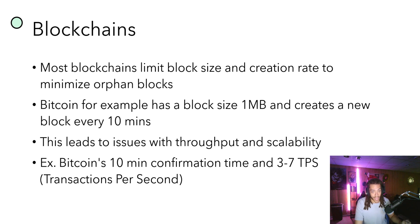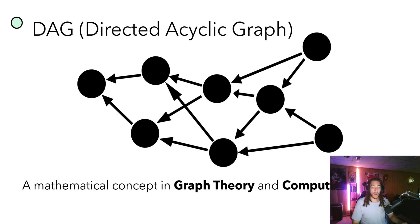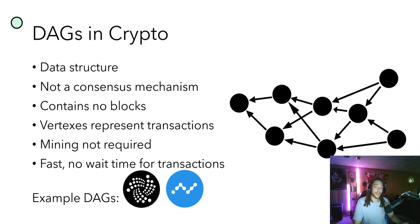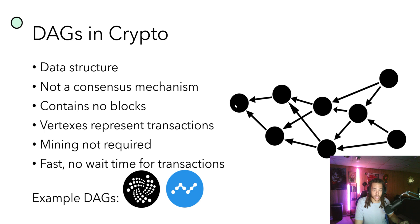Now we'll get into what a DAG is before explaining what a BlockDAG is. A DAG is a Directed Acyclic Graph — a mathematical concept in graph theory and computer science. In crypto, a DAG is a data structure, not a consensus mechanism; it's a framework. It contains no blocks. The circles you see in a DAG diagram represent transactions — vertices that represent transactions. Mining is not required because there are no blocks; transactions are placed down as fast as they come, each referring to the previous transaction visible to it.